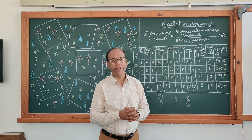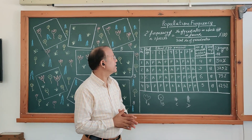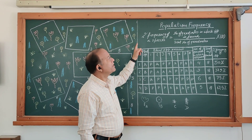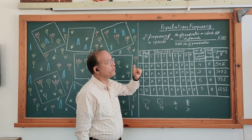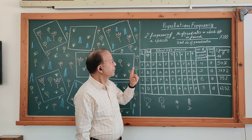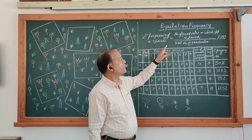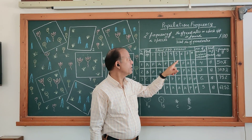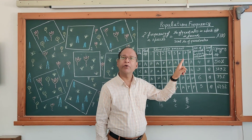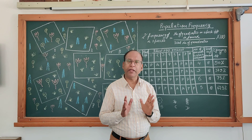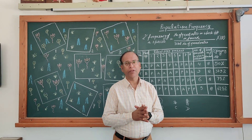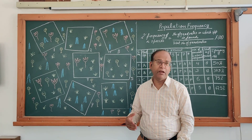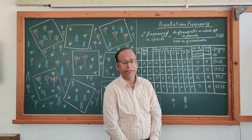We can calculate that population frequency by this formula. Percentage of frequency of a particular species equals the number of quadrants in which the species is found, divided by the total number of quadrants, multiplied by 100. This is the quadrant method by which we will find the population frequency.